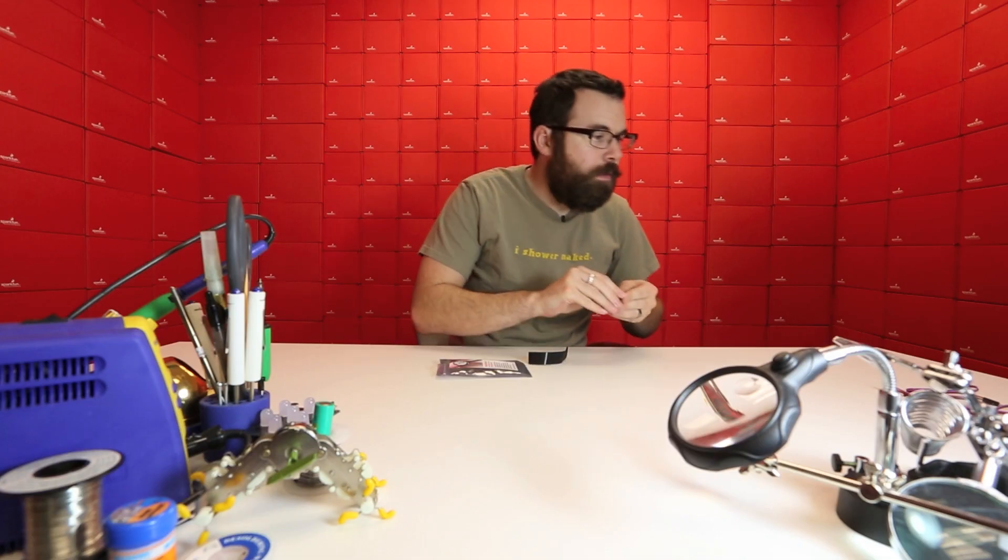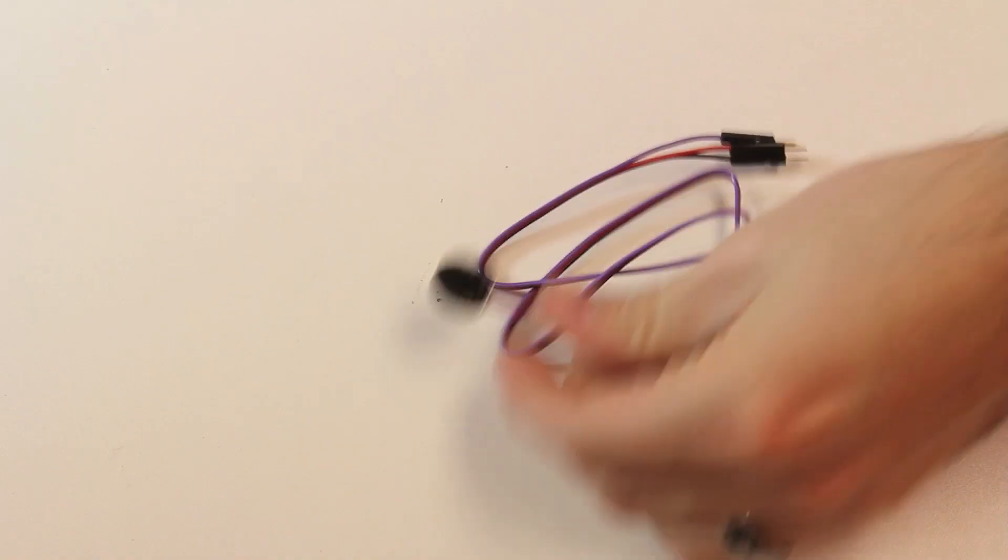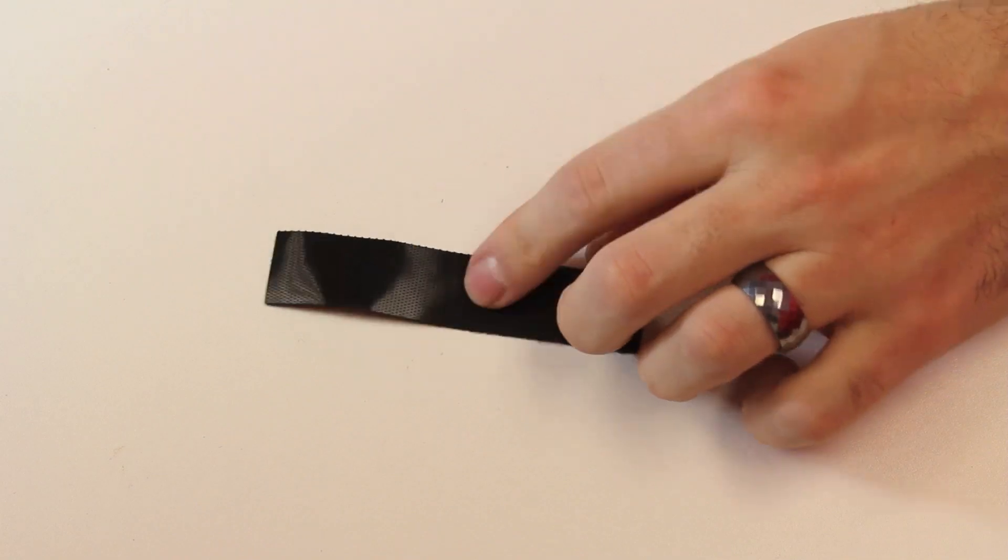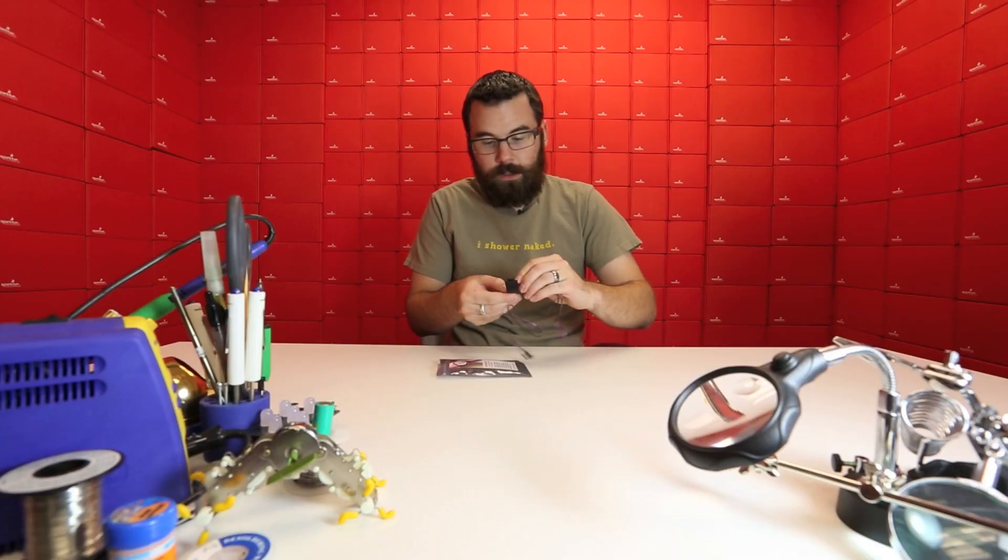It's got these little velcro discs that actually sit on the back of it, so you can see like that, and then they attach to this little velcro band. So you can just stick it on there like that, put on your finger, wrap it around, and you have a little pulse sensor.